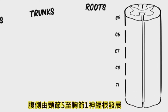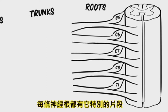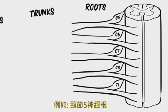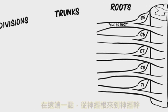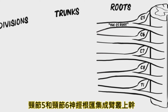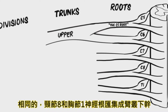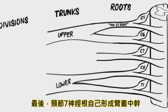Ventral rami from C5 to T1 form the roots. There is one root from each spinal segment, and they are named according to the spinal segment they represent — for example, the C5 root. More distally, the roots form the trunks. The C5 and C6 roots join together to form the upper or superior trunk. Likewise, the C8 and T1 roots join to form the lower or inferior trunk. Finally, the C7 root continues by itself to become the middle trunk.